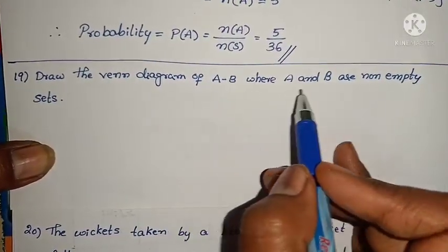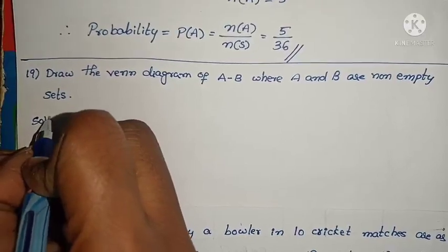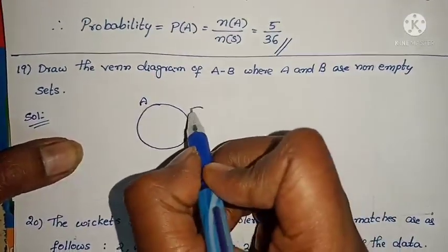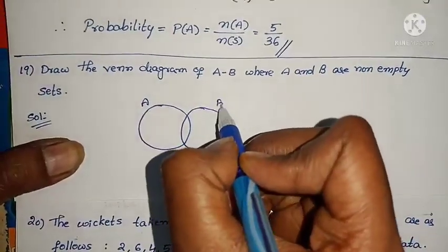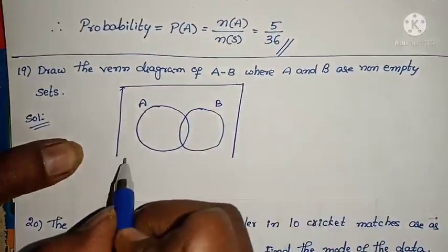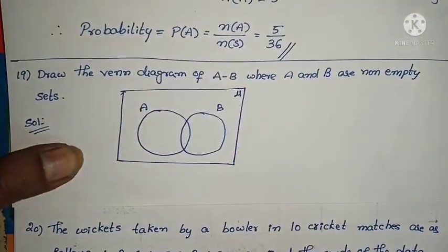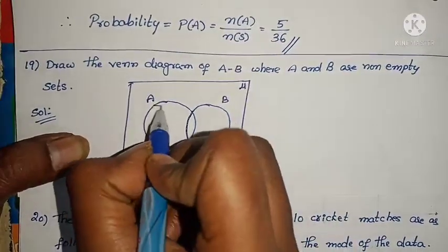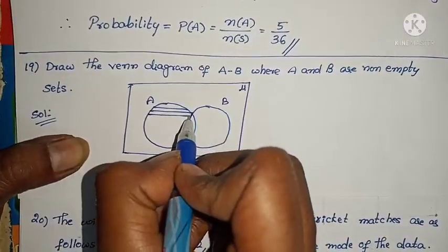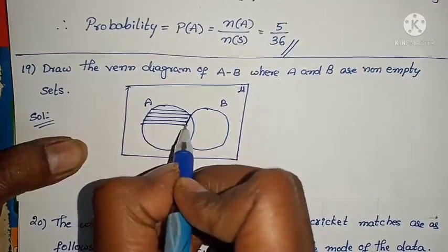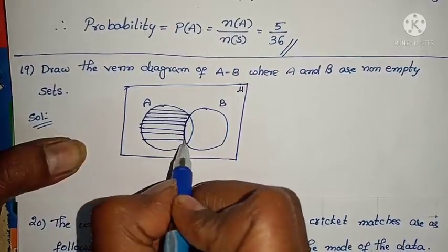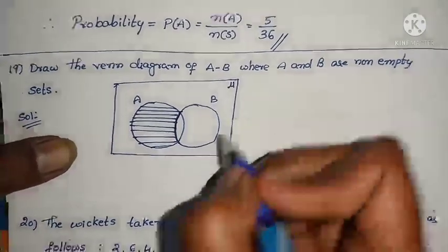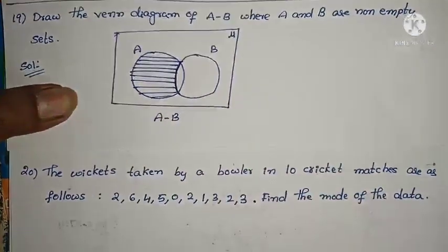Question 19: draw the Venn diagram of A minus B, where A and B are non-empty sets. Draw a rectangle box representing the universal set, with two overlapping circles A and B inside. Shade only the part of A that does not touch B — that shaded region represents A minus B.